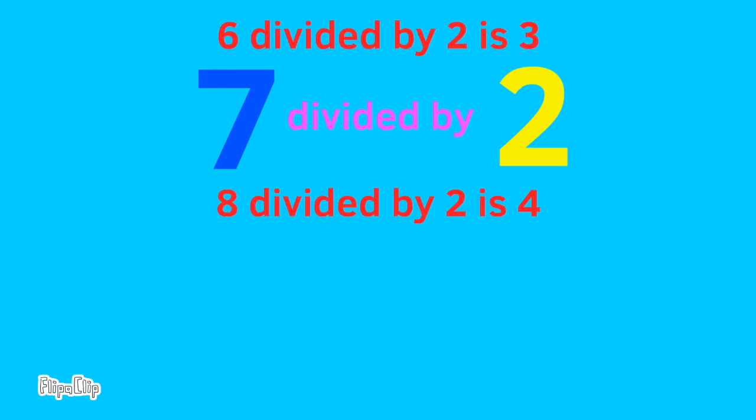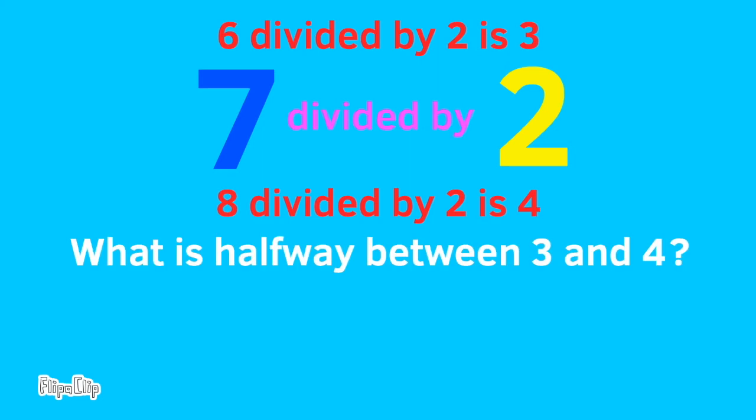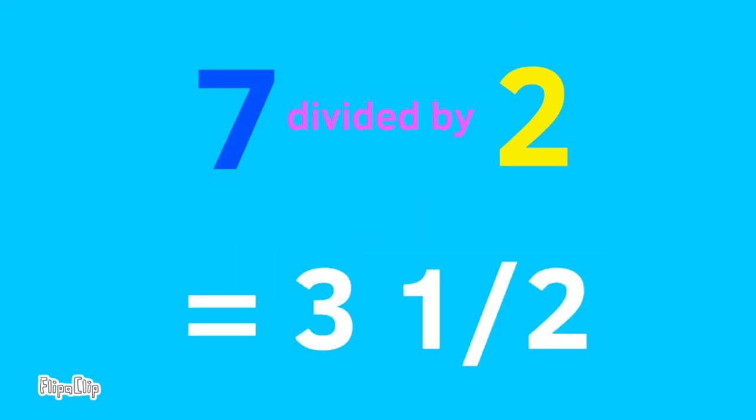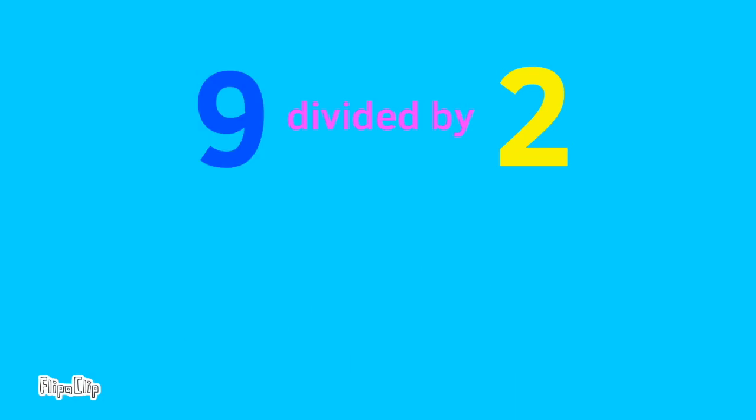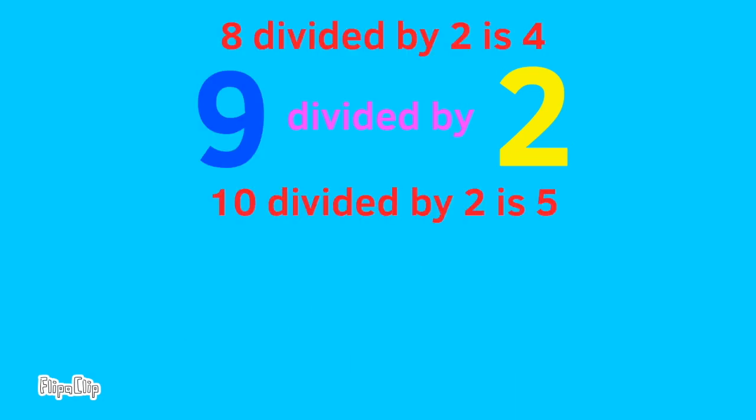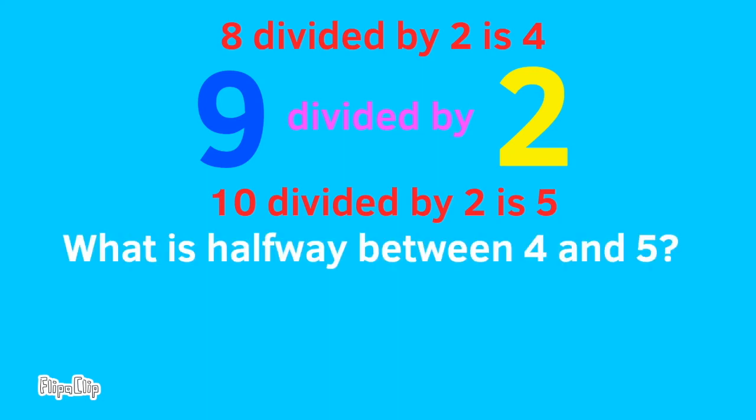7 divided by 2: 6 divided by 2 is 3, and 8 divided by 2 is 4 — halfway between 3 and 4 is 3 and a half. 9 divided by 2: 8 divided by 2 is 4, and 10 divided by 2 is 5 — halfway between 4 and 5 is 4 and a half.